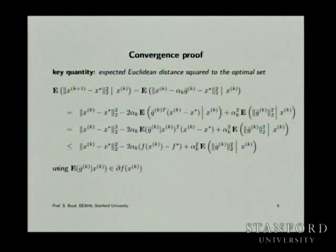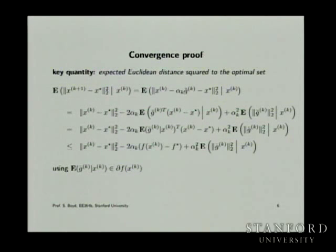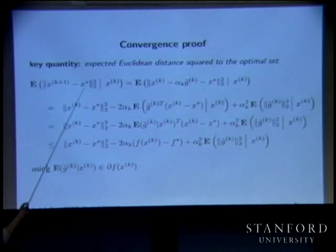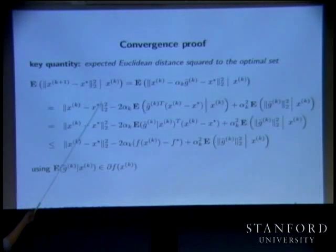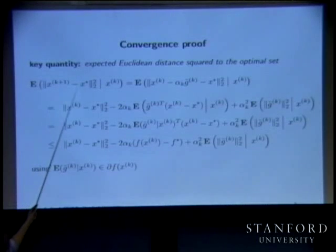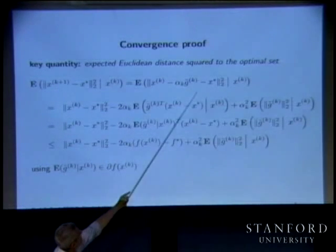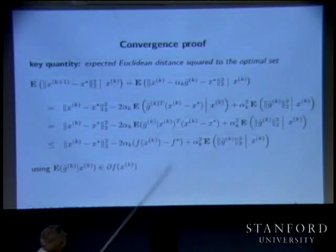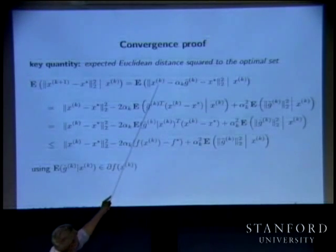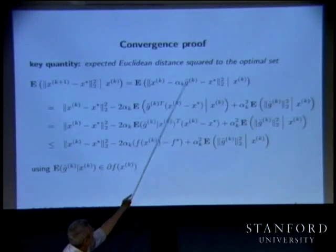It goes like this. We're going to look at the conditional expectation of the distance to an optimal point given x_k — the next distance. This is nothing but that. So we just plug that in, and we do the same thing we did with the subgradient method: we split it out, take this minus this, and get these terms.